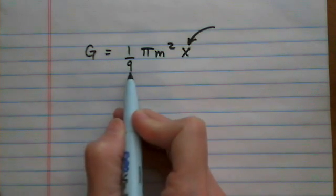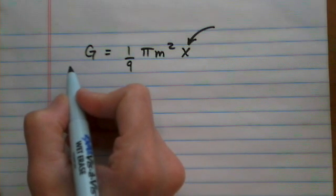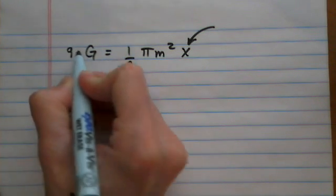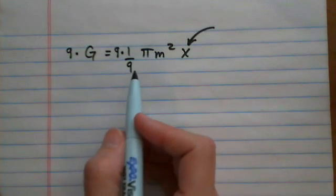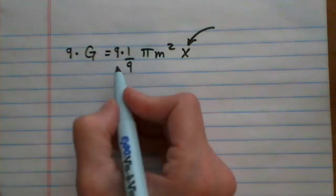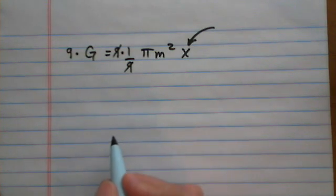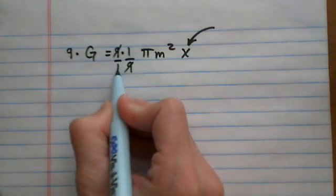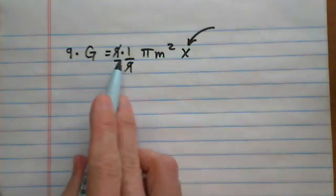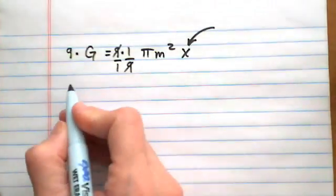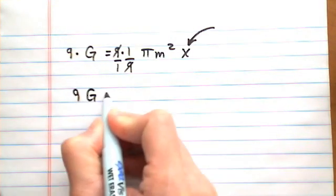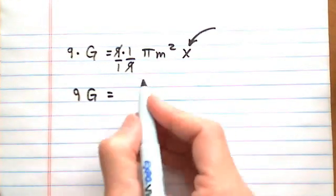Let's multiply both sides by the denominator of 9 to make the fractions go away. That's what we usually do in linear equations—we try to get rid of fractions first. If I multiply both sides by 9, this reduces to 1. Now we have 9g equals pi m squared x, and we're looking for x.